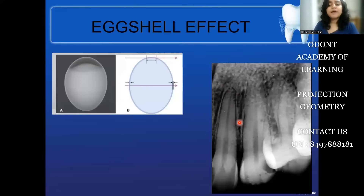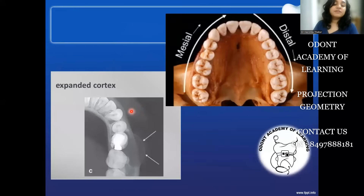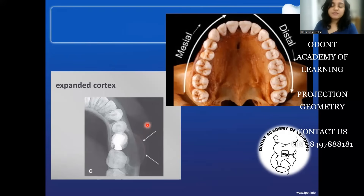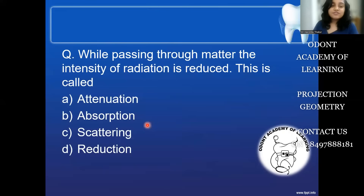This radio-opacity is not just limited to the lamina dura; it can also be seen in a cystic lesion where the outer cortex or periphery appears corticated — that doesn't mean the inside is hollow. It can also be seen in structures like the floor of the maxillary sinus, which appears as a radio-opaque line. Before we end, here is a question: while passing through matter, the intensity of radiation is reduced — this intensity reduction is called in radiology as what? Attenuation, absorption, scattering, or reduction? Kindly comment below and we will get back to you with the correct answer.